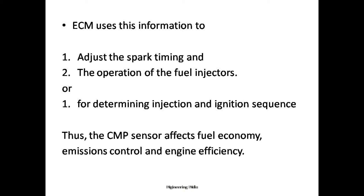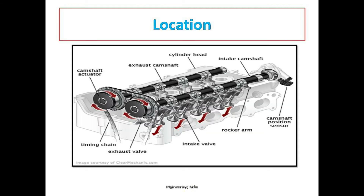You can see the location of the CMP sensor on the right side. This is a double overhead camshaft type — called DOHC. You can see the camshaft position sensor at the end of the camshaft on the right side. At the end of the camshaft there will be the sensor — that is the camshaft position sensor.